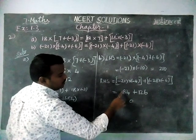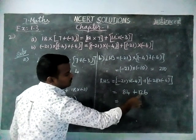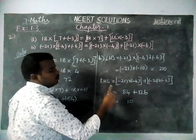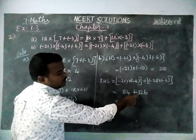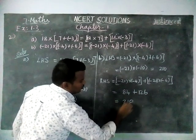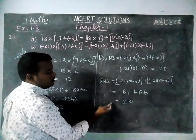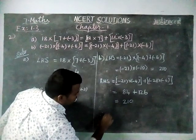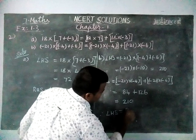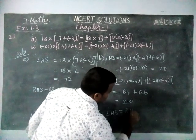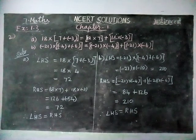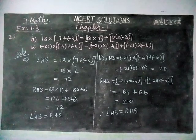Adding 84 and 126: 4 plus 6 is 10, write 0 and carry 1. 8 plus 2 is 10, plus 1 is 11, write 1 and carry 1. Then 1 plus 1 is 2. So the answer is 210. Therefore, left hand side is equal to right hand side. LHS is equal to RHS. That's all. Thank you students.